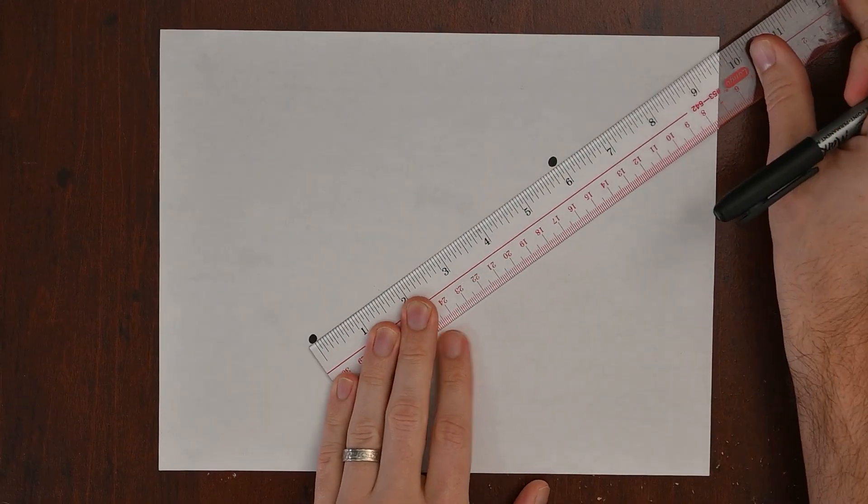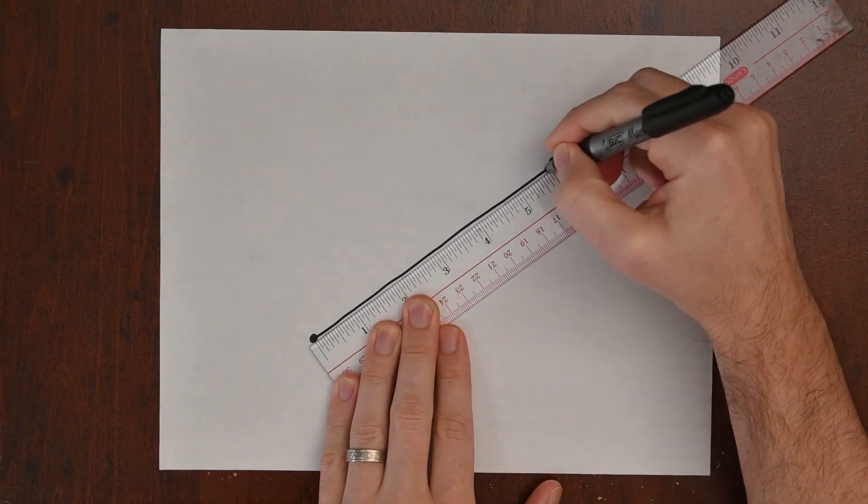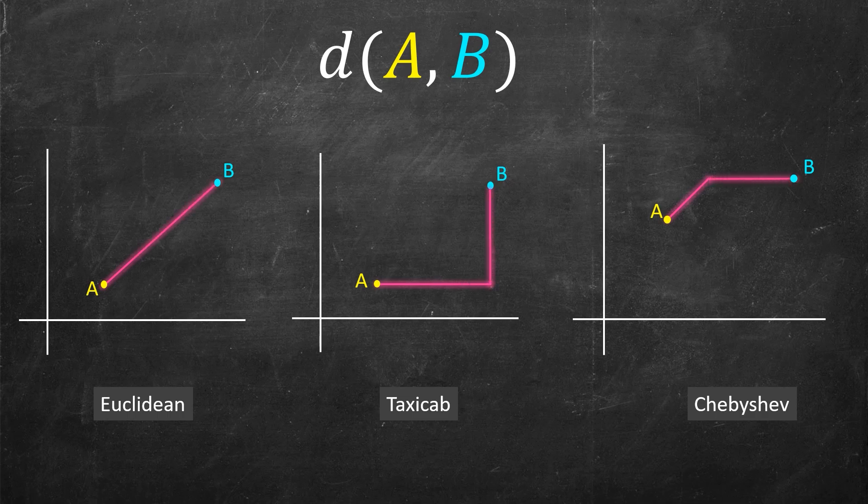What is distance exactly? You might think just take two different points and measure it, right? That's the distance. But in this video, we're going to see that there are all kinds of different types of distance.